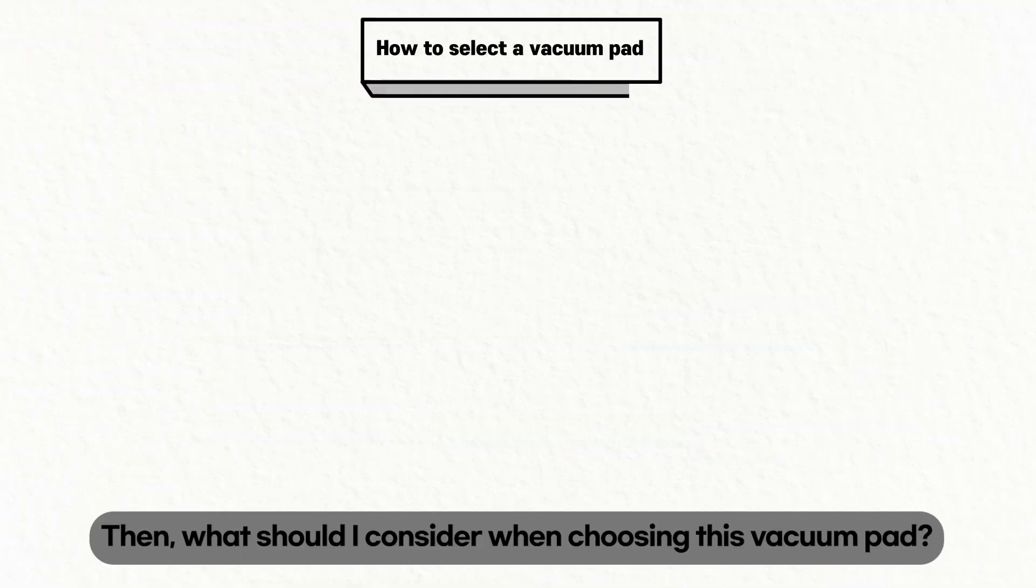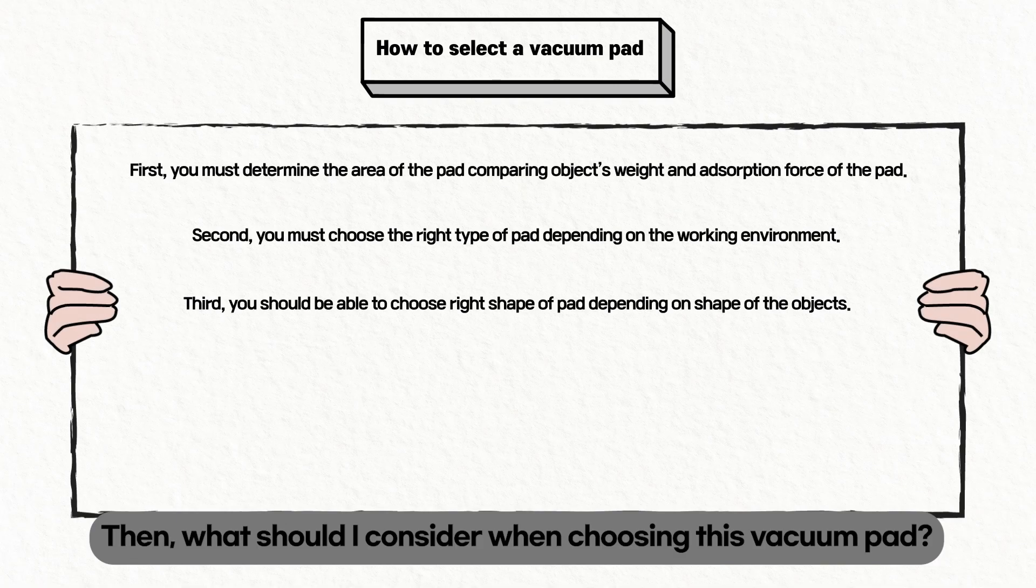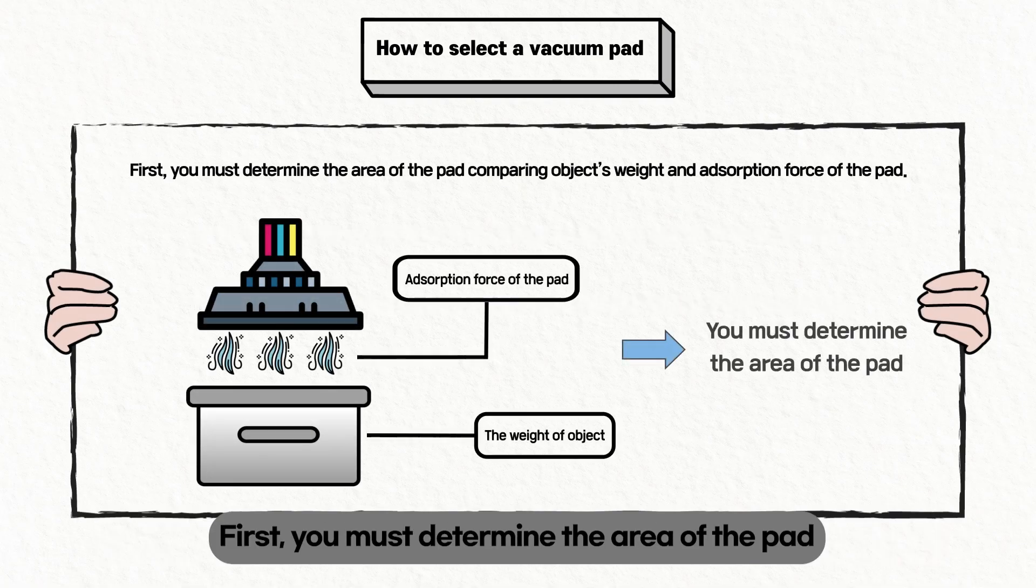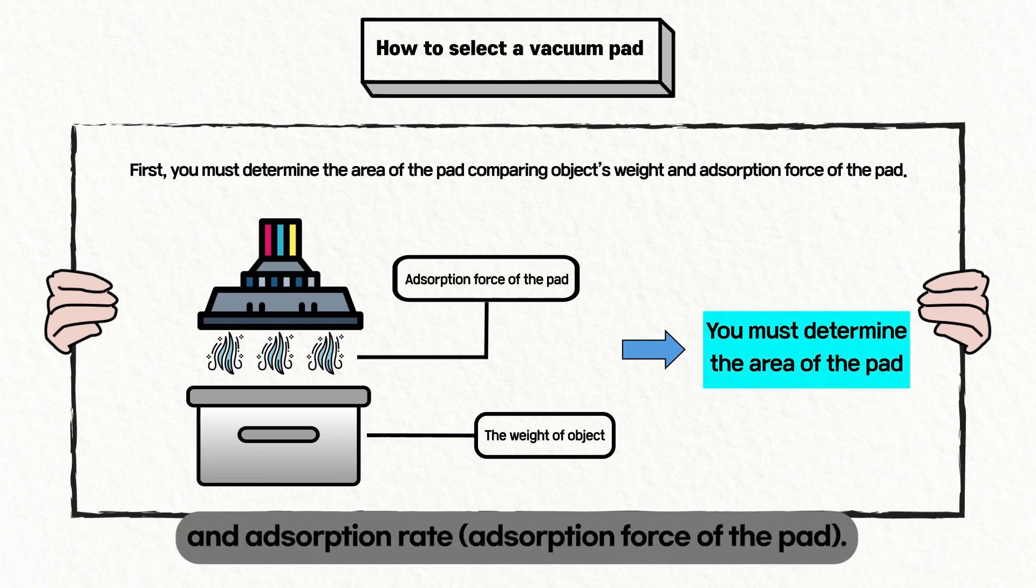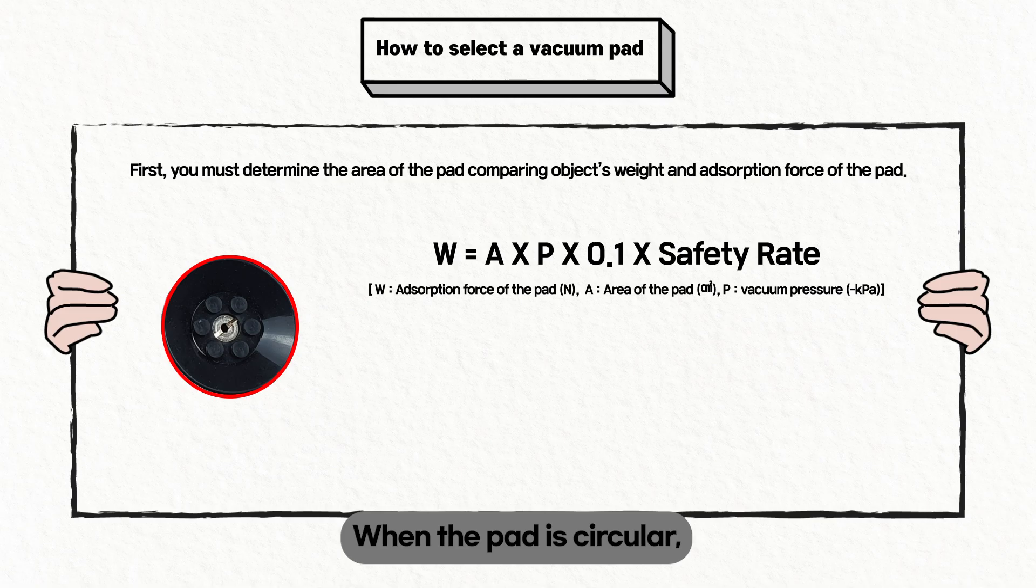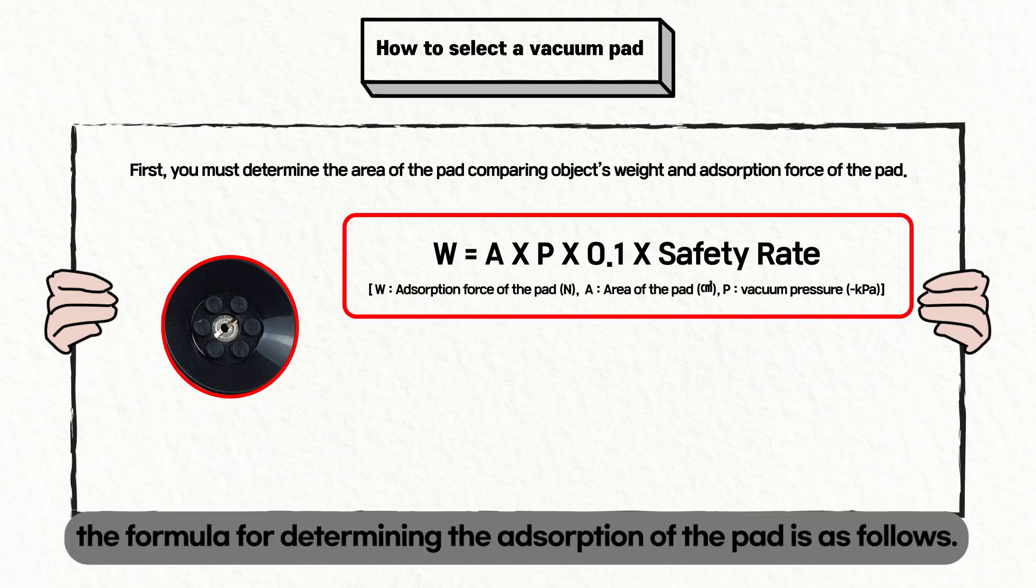Then what should I consider when choosing this vacuum pad? First, you must determine the area of the pad, comparing the object's weight and absorption rate. When the pad is circular, the formula for determining the absorption of the pad is as follows.